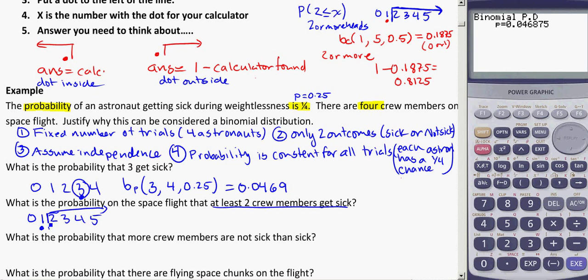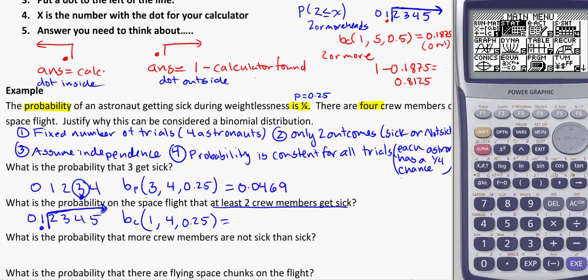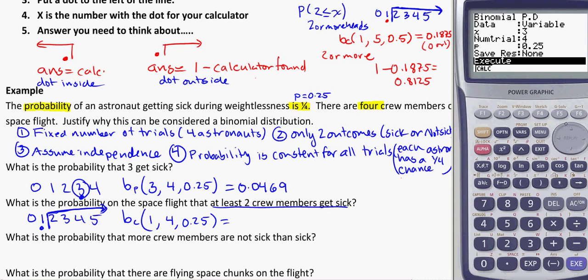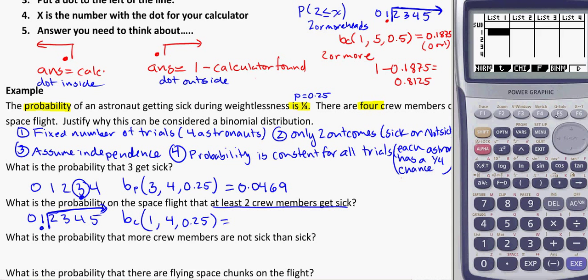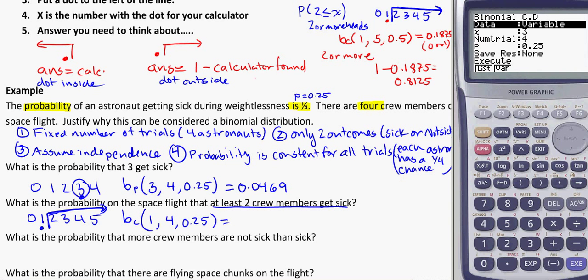And this one is a range, so it's BCD, not BPD. X is going to be one. Number of trials is still four. Probability is still 0.25. So coming into here, menu, exit, exit. Make sure you go back to pick the right distribution. It's binomial, and here we need the CD, not the PD. So you can also check that. It says CD at the top, which is what we're looking for, or the continuous one where there's more than one option. My dot went to the left of the line, it was on one. I still have four and 0.25.